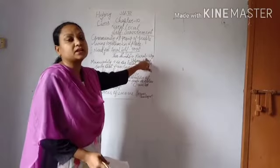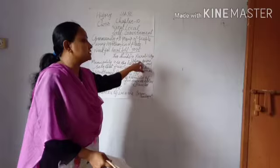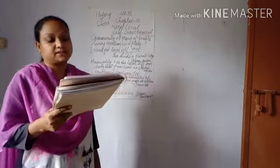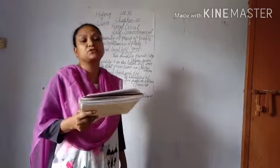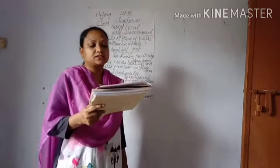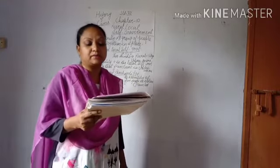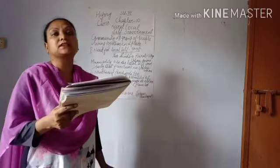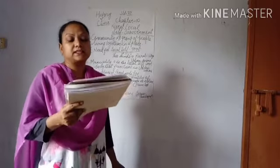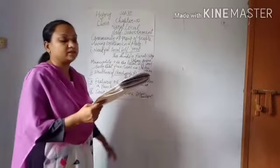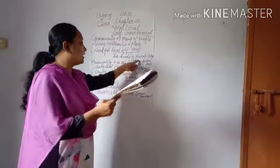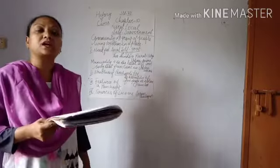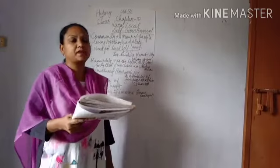Local self government bodies are of two kinds. Number one is rural — the work which is done in the village — and number two is urban — the work which is done in towns and cities. Thus, the Panchayati Raj is the local self government body that functions in the rural area, and the municipality is the local self government body that functions in the urban area, meaning towns and cities. Now turn to page number 96.